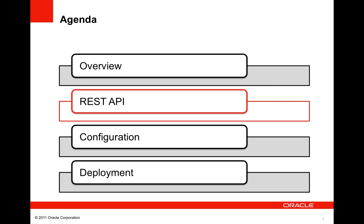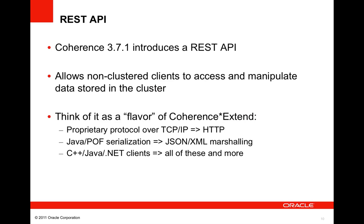Now that I've given you background about REST, I'm going to dive into the new Coherence REST API. Coherence 3.7.1 includes a REST API which allows non-clustered clients to access and manipulate data stored in clustered Coherence caches. You can think of the REST API as a new flavor of Coherence Extend — one that replaces the proprietary binary TCP/IP protocol with vanilla HTTP, and marshals data objects to and from JSON or XML instead of using Java or POF serialization. It supports all the client languages of Coherence Extend and more.